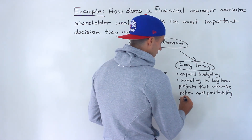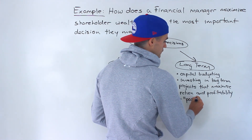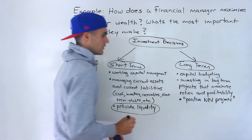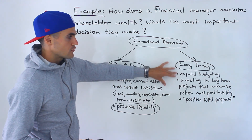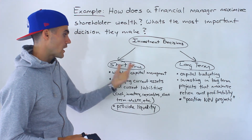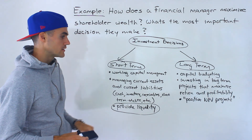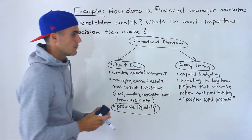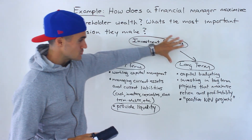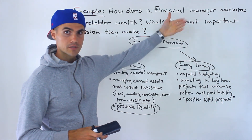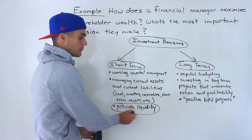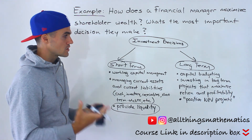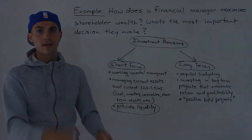Later on in the course, you'll see that you want to invest in positive NPV projects — that terminology will come up. In the short term, investment decisions are to provide liquidity, while in the long term, they're to maximize return and profitability. A financial manager always has to balance both. Too much focus on the short term means lots of liquidity but not much long-term growth. Too much focus on the long term means the company might grow eventually, but there may not be enough liquidity to pay off short-term debts or interest payments. So there's always got to be a balance with investment decisions in the short and long term.